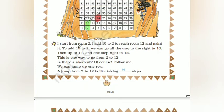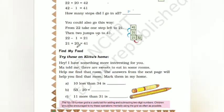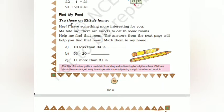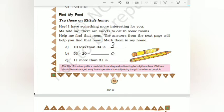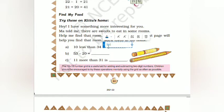Find my food - try this on Kittu's home. There are sweets hidden in some rooms; help find that room. The answers from the text page will help you find that room. Mark them in the home. In order to find them, we have to solve problems. 10 less than 34: so 34 minus 10, the result is 24.